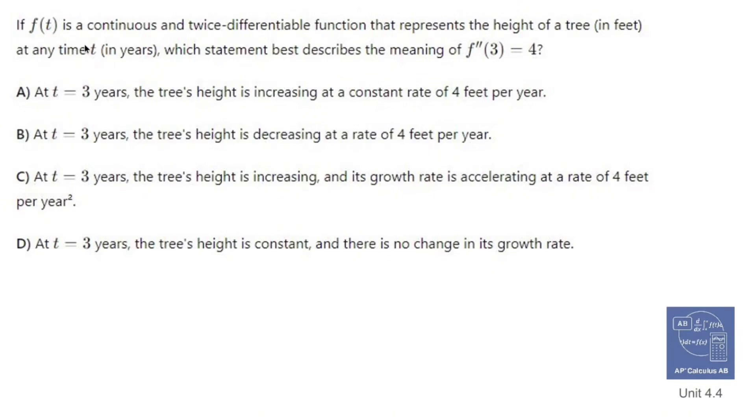If f of t is a continuous and twice differentiable function that represents the height of a tree in feet at any time t in years, which statement best describes the meaning of f double prime of 3 equals 4? All right. So f of t is the height of the tree. I don't know what formula it is, doesn't really matter.